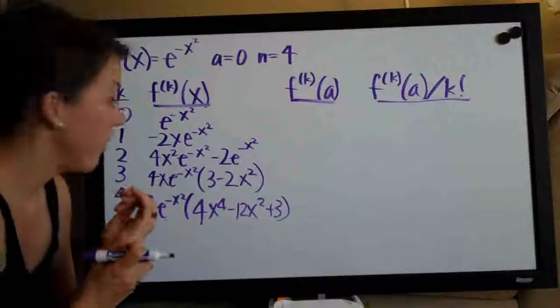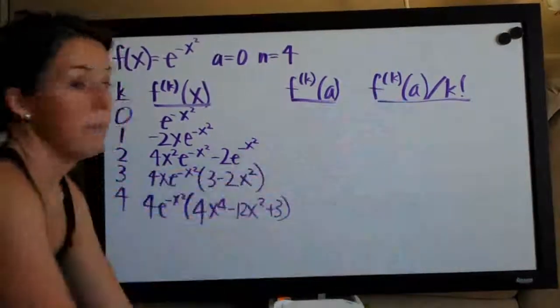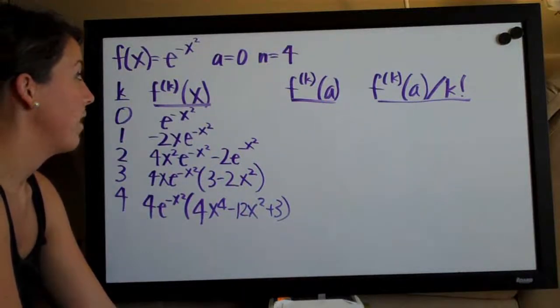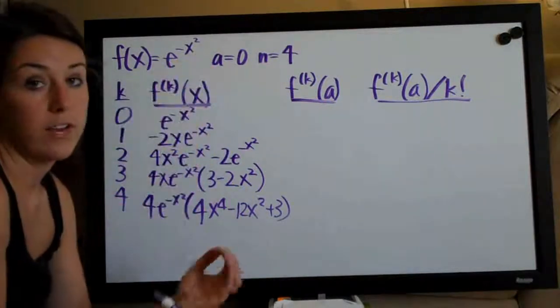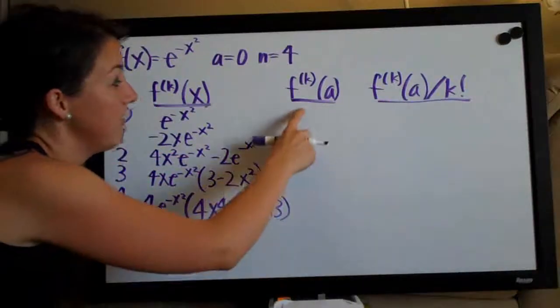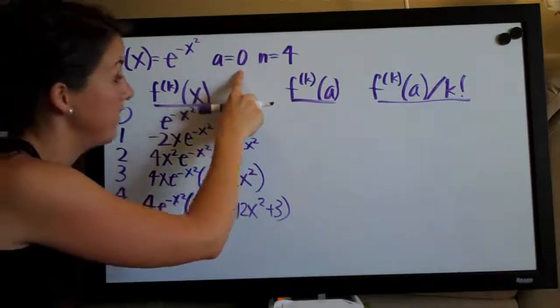Finally, we have all of our derivatives. Now, these two steps are much easier. This is by far the hardest column, especially if you've got a function that starts getting complicated. So now we have these two columns.